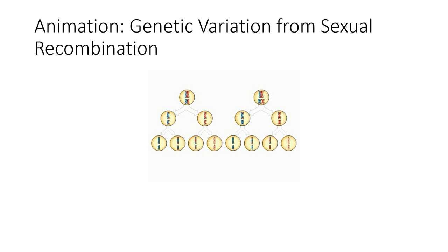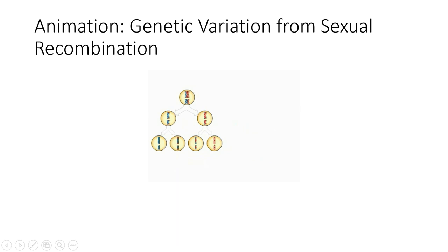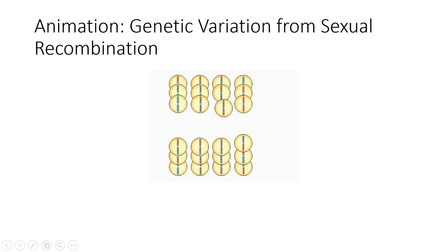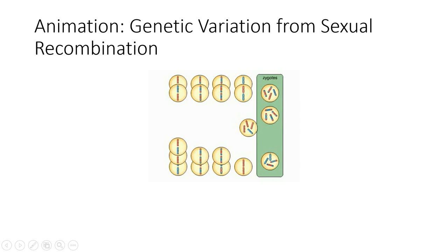Crossing over produces parental gametes with chromosomes like those of the parents, and recombinant gametes with a mixture of genes from both sets of chromosomes. Independent orientation and crossing over occur simultaneously during meiosis, multiplying genetic variation among gametes. A human being can produce an almost infinite variety of gametes, and the random nature of fertilization adds further variation. Theoretically, one human couple is capable of conceiving a number of genetically different offspring far greater than the number of humans who have ever lived.